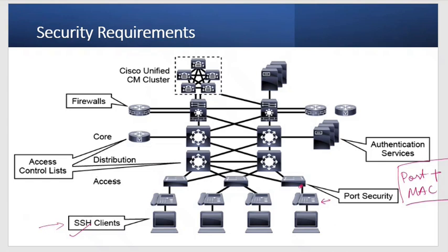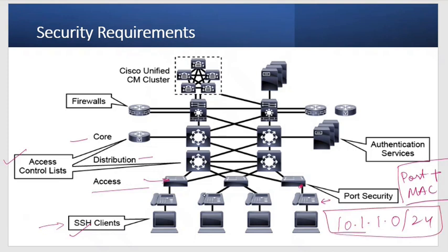On the distribution and core layer, we can implement access control lists. Access control lists are a security tool we can implement on layer three switches and routers to filter traffic. For example, if your end devices are running in a network like 10.1.1.0/24, you can allow only that particular subnet to send traffic out through the distribution or core layer. The ACL will permit that network and deny all others, allowing you to perform packet filtering based on IP addresses.